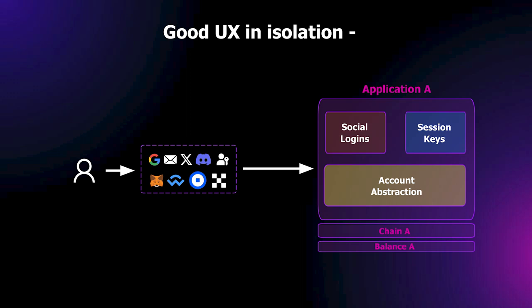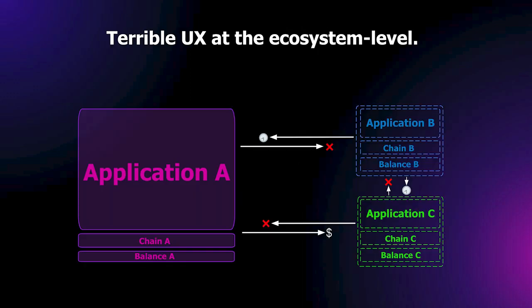The issue, though, is that this is siloed. You have the application, the chain that it's on, and your balance on that chain. This model does not apply well to the entire ecosystem. The UX at the ecosystem level is pretty terrible at the moment. I'm in this application, I onboarded with my social login or MetaMask wallet, and I want to use this balance I initially deposited across application B and application C. But this isn't always possible, or if it is, it's slow, you have to manually bridge, and it's expensive sometimes. Users not only need to manually move their funds across chains, but they also need to be cognizant of their balances on different chains.